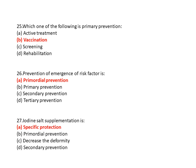Question 25: Which one of the following is primary prevention? Option A is active treatment, option B is vaccination, option C is screening, and option D is rehabilitation. So option B is the correct answer — vaccination.